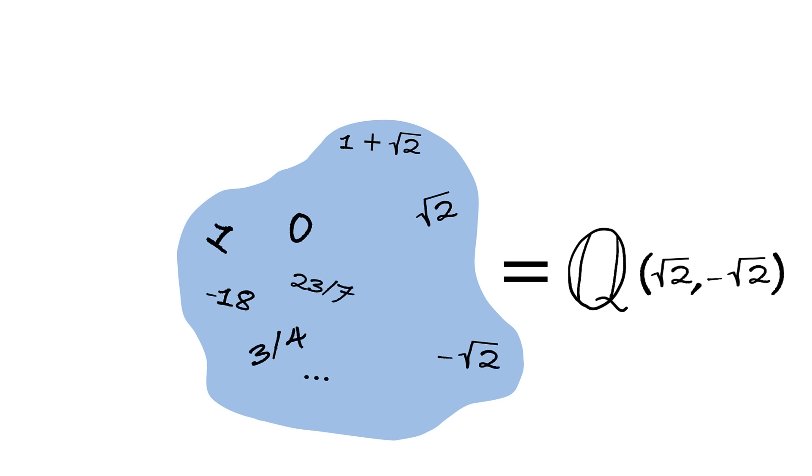We extended the field of rational numbers with the help of square root of 2 and minus square root of 2. But it's easy to see that it was enough to only use square root of 2 because minus square root of 2 can be obtained by multiplying square root of 2 by minus 1. This new field, by the way, consists of all numbers of the following form, where x and y can be any rational numbers.